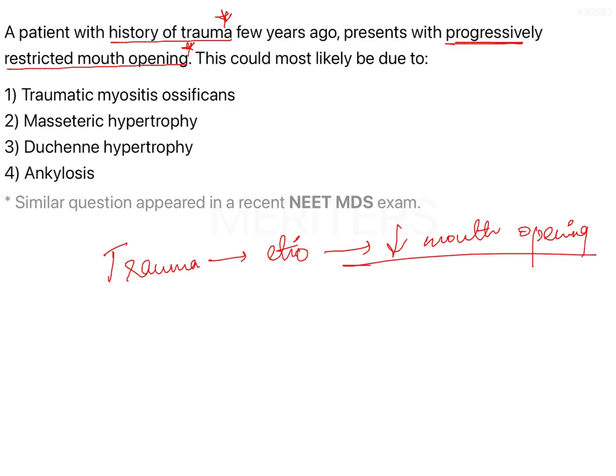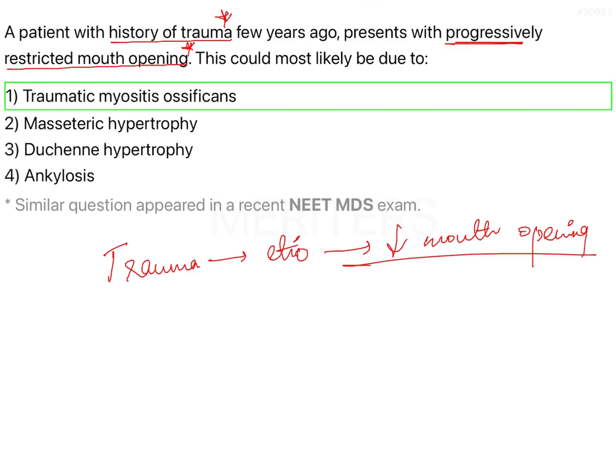The etiopathogenesis of traumatic myositis ossificans: trauma causes cell death, the cells — typically the myocytes of the masseter muscle — undergo complete necrosis. This necrotic mass becomes calcified, and the calcified mass makes it difficult for the patient to open their mouth, so mouth opening progressively decreases.